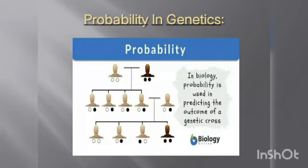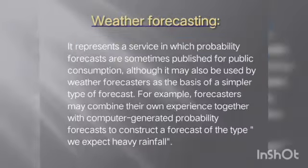Application of probability in genetics. In biology, probability is used in predicting the outcomes of a genetic cross, as shown in the figure.